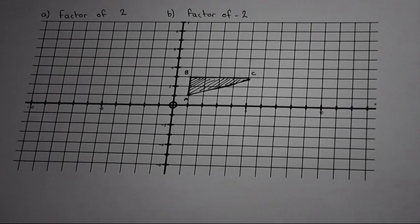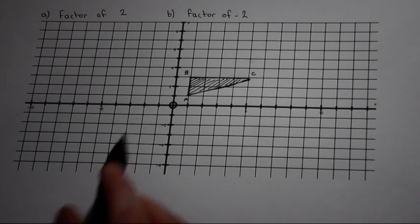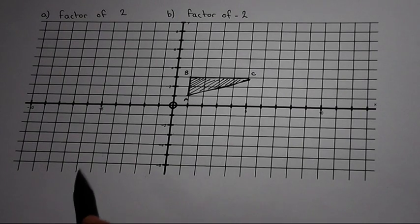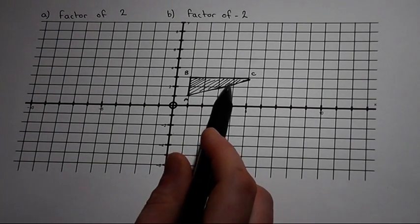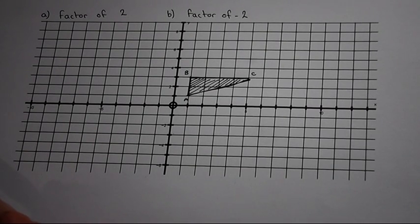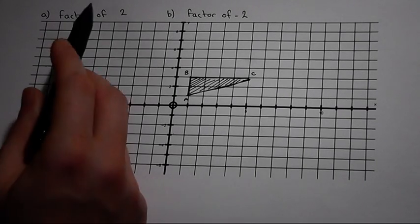This video shows two examples of enlargements using the origin as the center of enlargement. We will enlarge this shape by firstly a factor of plus two and then a factor of negative two.